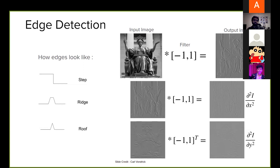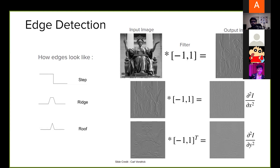An edge can also form within the same object because of material properties — for example, a dog's forehead and ear have different colors, forming an edge. A third example is surface normal discontinuities: the leg of a chair has two adjacent surfaces at an angle, so light falls differently on each face, forming an edge. Now, going from white to black — if the value is 255 and suddenly drops to near zero — that's where an edge is detected.